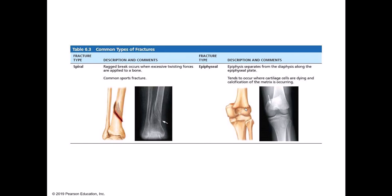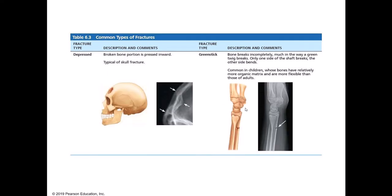Epiphyseal plate fractures can occur in children because we're separating at that plate. The other type of fracture that's common in children is what we call a greenstick fracture. These are incomplete fractures. If you've ever had a really young, new branch that you just pulled off a tree and you try to bend it, it tends to just bend and not break completely — you might break a portion of it but not snap it all the way in two. Children's bones are much more flexible than adult bones; they have a lot more organic matter so they're much more resilient, and these incomplete greenstick fractures tend to occur in kids.